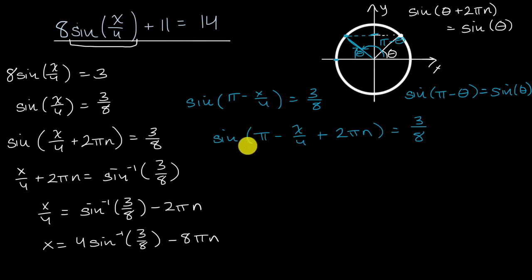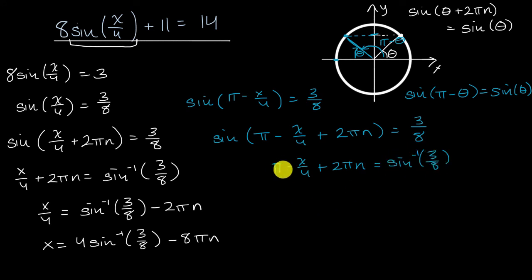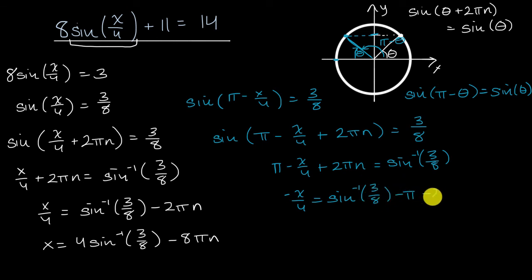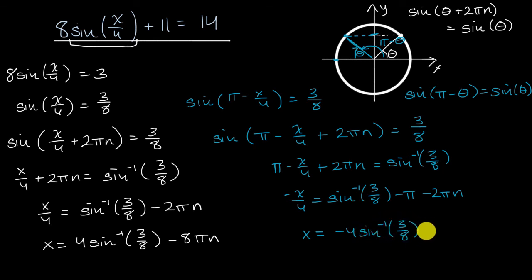For the second expression, taking the inverse sine of both sides gives π minus X over four plus 2πN equals inverse sine of 3/8. Subtracting π and 2πN from both sides: negative X over four equals inverse sine of 3/8 minus π minus 2πN. Multiplying by negative 4: X equals negative 4 times inverse sine of 3/8 plus 4π plus 8πN. The union of both solution families gives the entire solution set to the original equation.